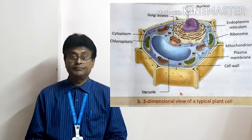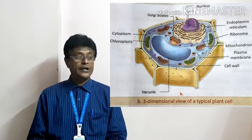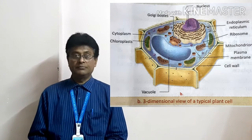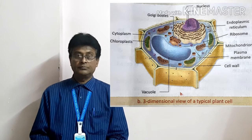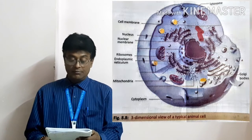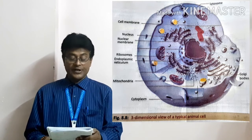Question number 5: Draw and label a plant cell. Here is the diagram. Question number 6: Draw and label an animal cell. Here is the diagram.